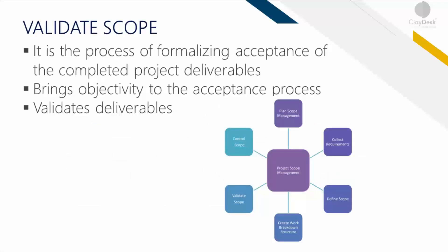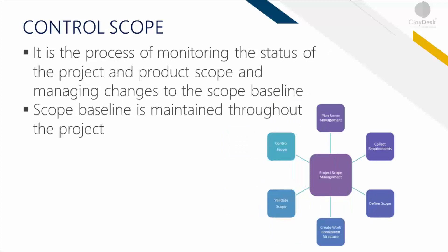You have to validate the scope, which is the process of formalizing acceptance of completed project deliverables. The key benefit is that it brings objectivity to the acceptance process. If you have a detailed WBS and a well-scoped-out plan, it's easier for all stakeholders — client side or internal senior management — to accept. Control scope is the process of monitoring the status of the project. You don't just create the scope, you also need to control and monitor it to ensure everything stays within the set boundaries. The key benefit is that the scope baseline is maintained throughout the project.